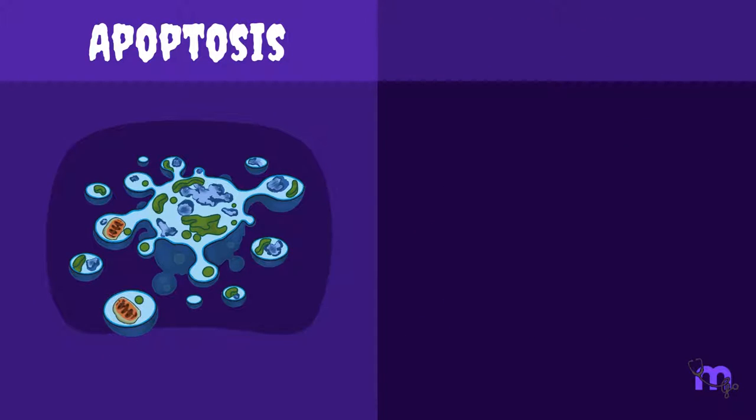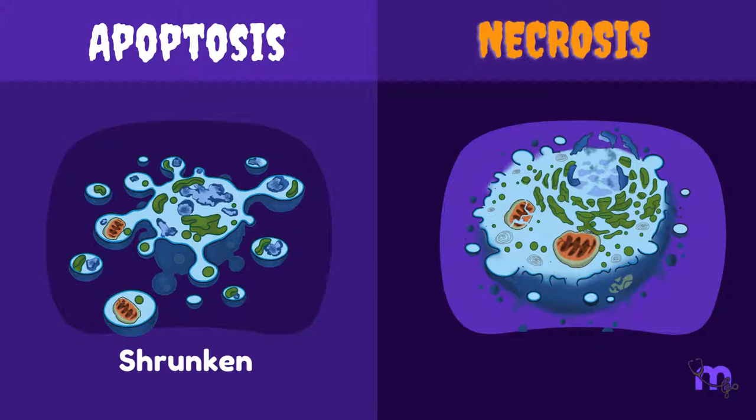An apoptotic cell is a scared, shrunken one, whereas a necrotic cell is an overconfident, swollen one.